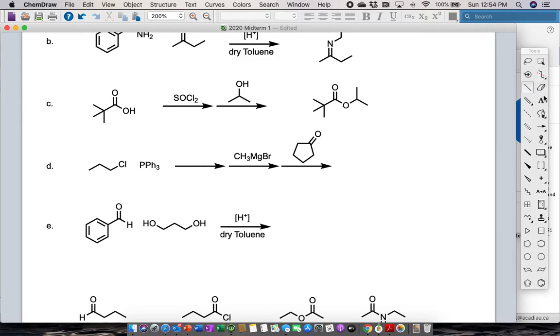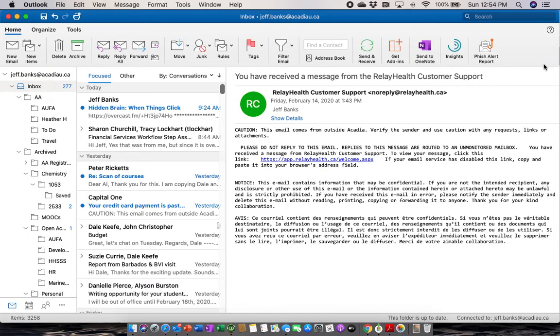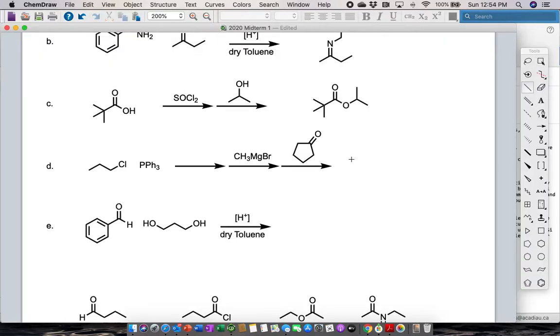Now here, those of you who remember the Wittig, the only time we've seen triphenylphosphine and an alkyl chloride was in the Wittig reaction. So how do we work this out? Again, we use the fact that we have three arrows here. So our first reaction must involve these two species to form something here that then reacts with this.